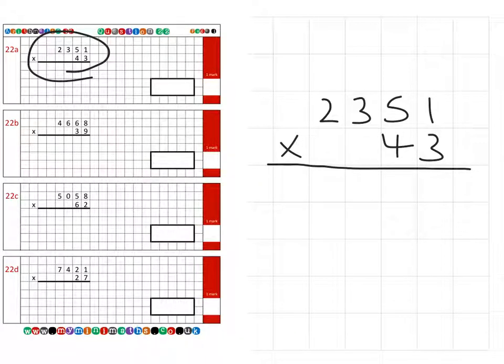First, we're going to multiply by the units column. That's 3 times 1 is 3. 3 times 5 is 15, carry the 1 into the hundreds column. 3 times 3 is 9 plus the 1 is 10. 3 times 2 is 6 plus the 1 is 7. So that's our units column completed.